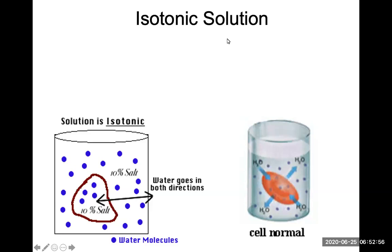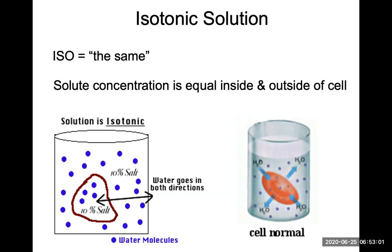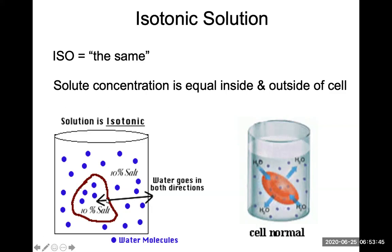An isotonic solution — the prefix iso means the same — is where the solute concentration is equal inside and outside of the cell. For example, a red blood cell placed in a normal isotonic solution: if the exterior is 10% salt and the interior is also 10% salt, water will move in both directions but not more in one direction than the other. This is good for your red blood cells so they aren't gaining or losing more water than they should.